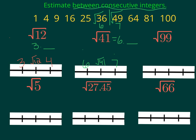Square root of 99 falls in between the square root of 81 and the square root of 100, so it falls in between 9 and 10. The square root of 99 is going to fall somewhere in between 9 and 10. If you were to evaluate it, it would be 9 point something.